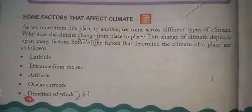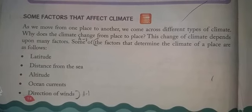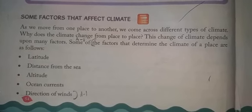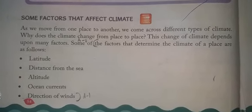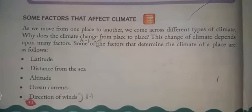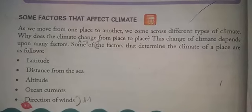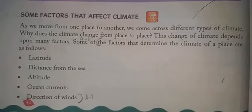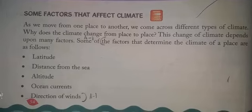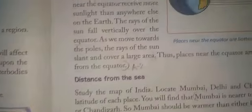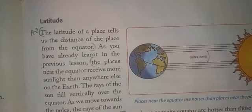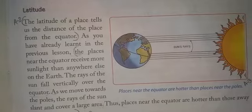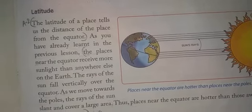Some of the factors are as follows: number one, latitude; number two, distance from the sea; number three, altitude; number four, ocean currents; number five, direction of winds. Now we will study these factors in detail, beginning with latitude.